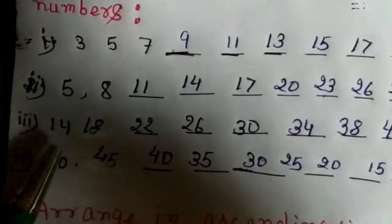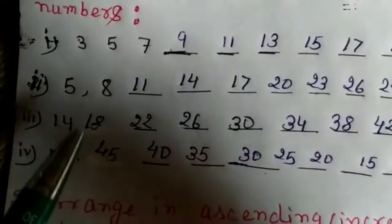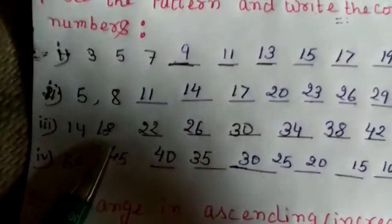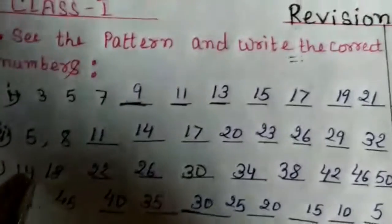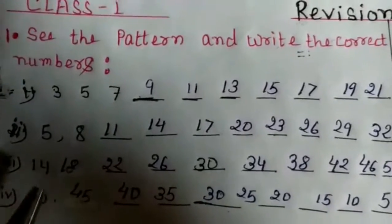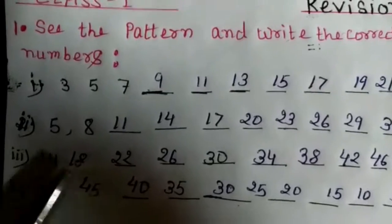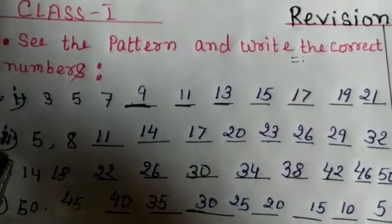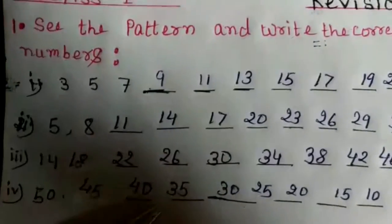Now the third question. It starts with 14, and after 14 there is 18. So in 14 we add 4 to get 18. That is: 14, 15, 16, 17, 18 — we add 4. In 18 we add 4.